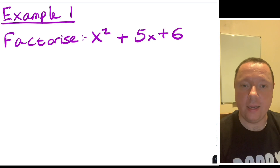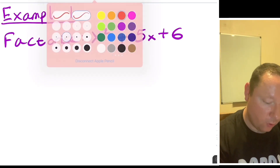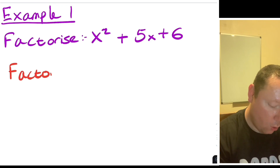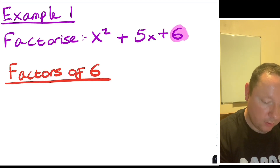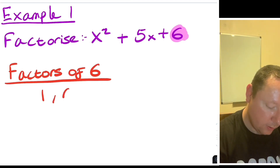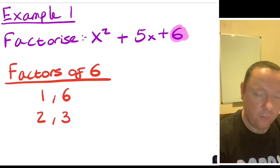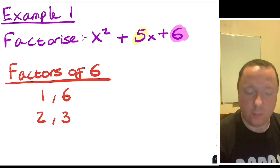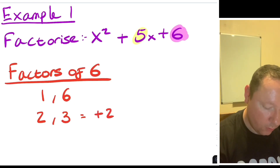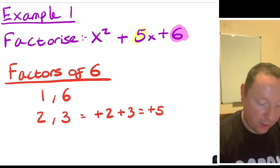So our steps: first, find factors of 6 — the last number. Listing them: 1 and 6, or 2 and 3. These have to add together to make the middle number, which is 5. The only way to add these pairs to make 5 is plus 2 plus 3 equals plus 5. 1 and 6 can't be added to make 5. So our two numbers are plus 2 and plus 3.